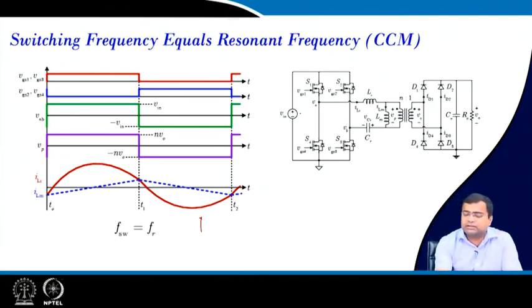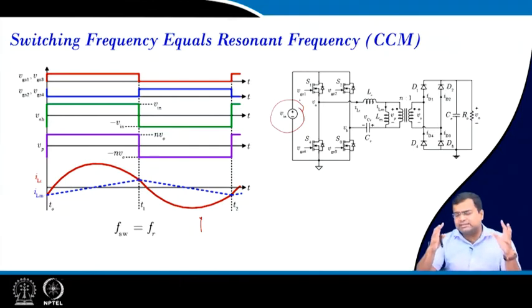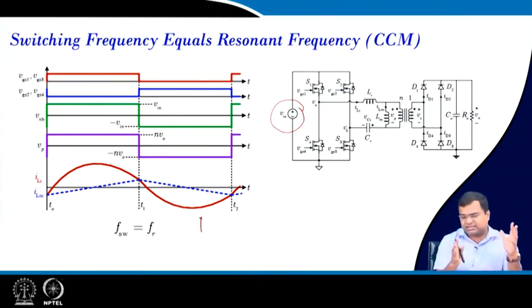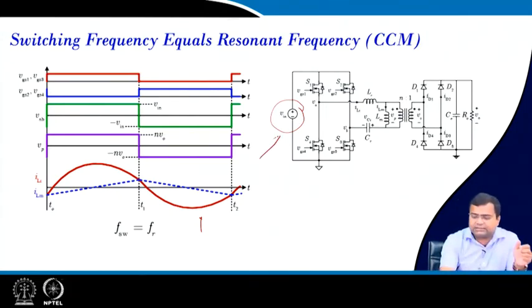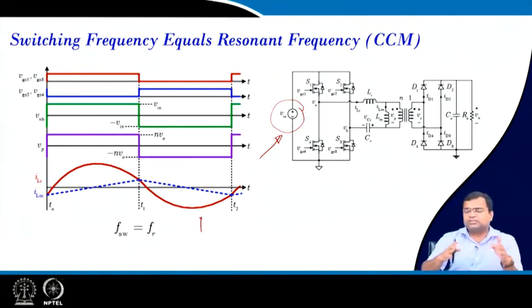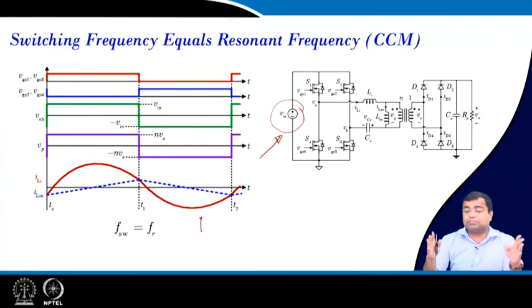The LLC converter is generally used in on-board or off-board chargers where the input is the DC link output of a PFC stage. By slowly adjusting this DC link voltage, it is possible to achieve resonant-frequency operation across a wider range of power levels.